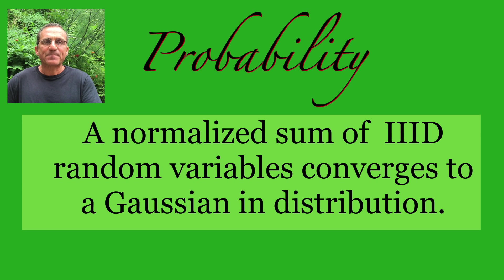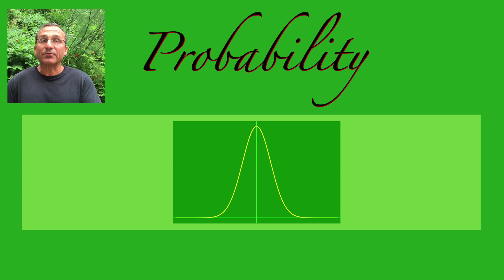Spot number ten finally goes to probability theory. This is the central limit theorem. A normalized sum of independently, identically distributed random variables with finite variance converges weakly to the Gaussian distribution. The density function of the Gaussian distribution is the bell curve.